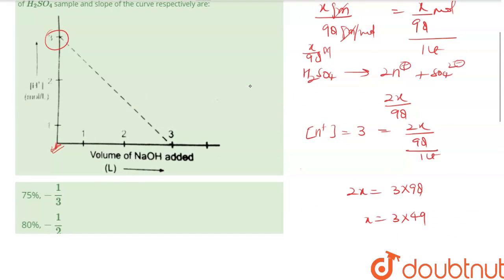So slope is y2 minus y1 upon x2 minus x1. So what is the slope? This is 3 and this is 3 and this is 3. So what is y2?